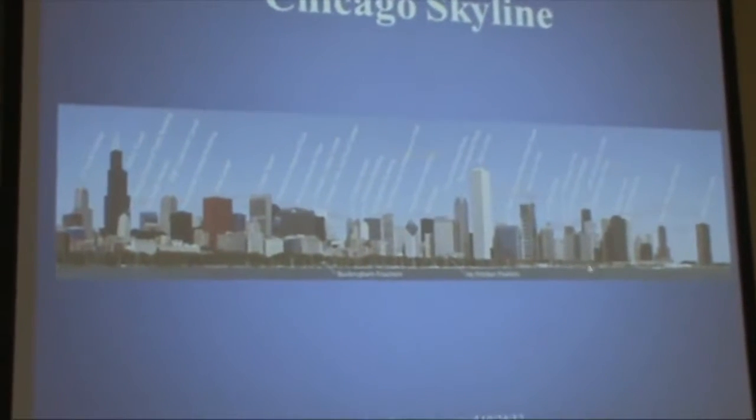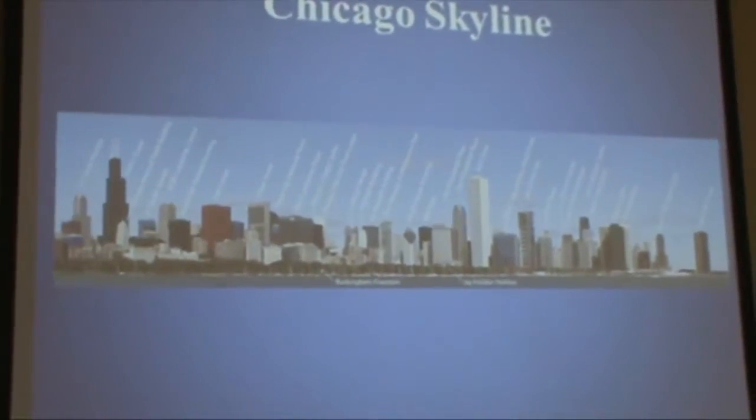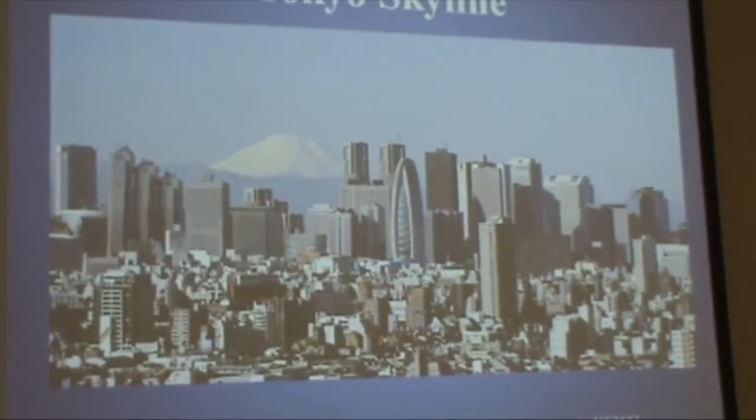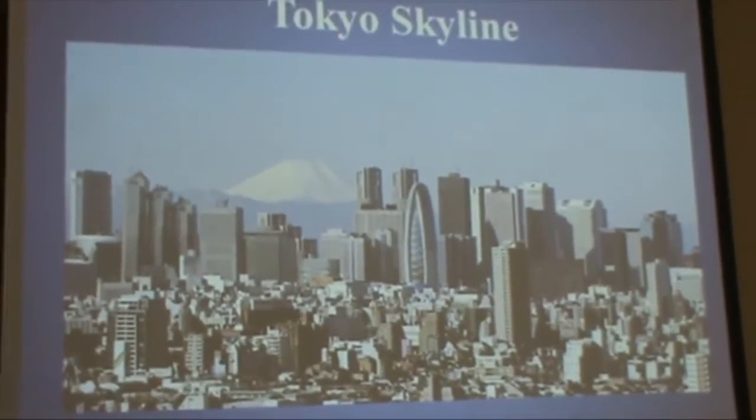The Chicago skyline shows how many skyscrapers were constructed with concrete. Even steel-based structures have concrete foundations — concrete is a huge building material that has literally changed the landscape of our world. The Tokyo skyline and the Dubai skyline, featuring what may still be the tallest building in the world, are all examples of what wouldn't be possible without Portland cement.